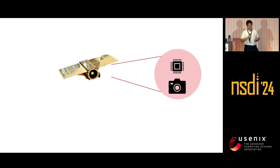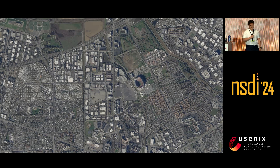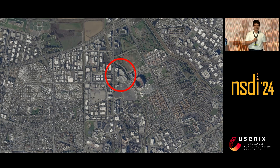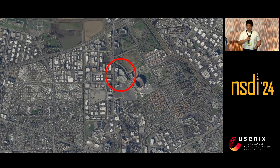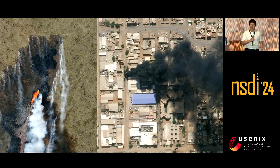One of these applications is to take high-definition images of the Earth. For example, what we see here is an image taken of Santa Clara County by the Planet SkySat. In this red circle is the Hyatt Regency Santa Clara — the very place we're sitting as NSDI is happening. From time to time in these satellite imageries there will be interesting events, such as a forest fire on the left side here, and a bomb attack on the right side.